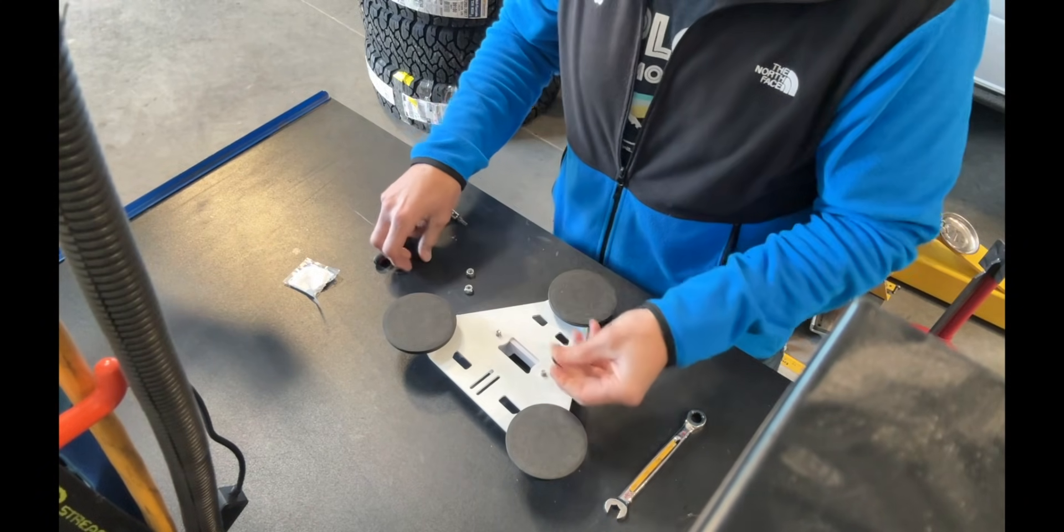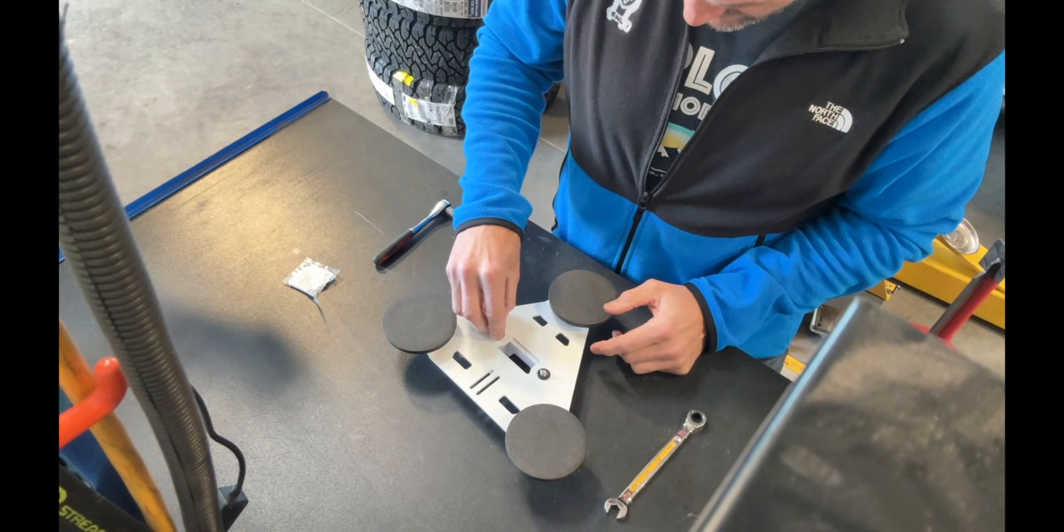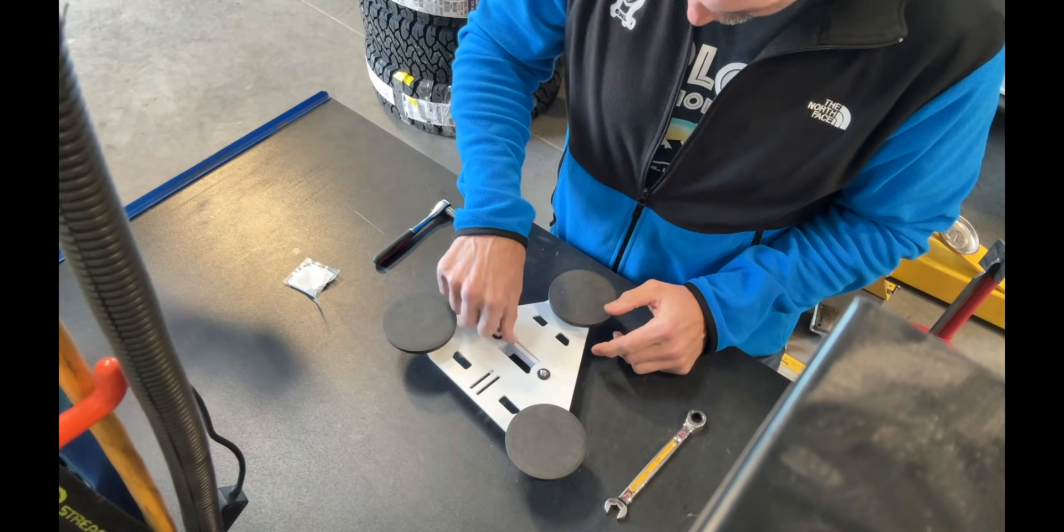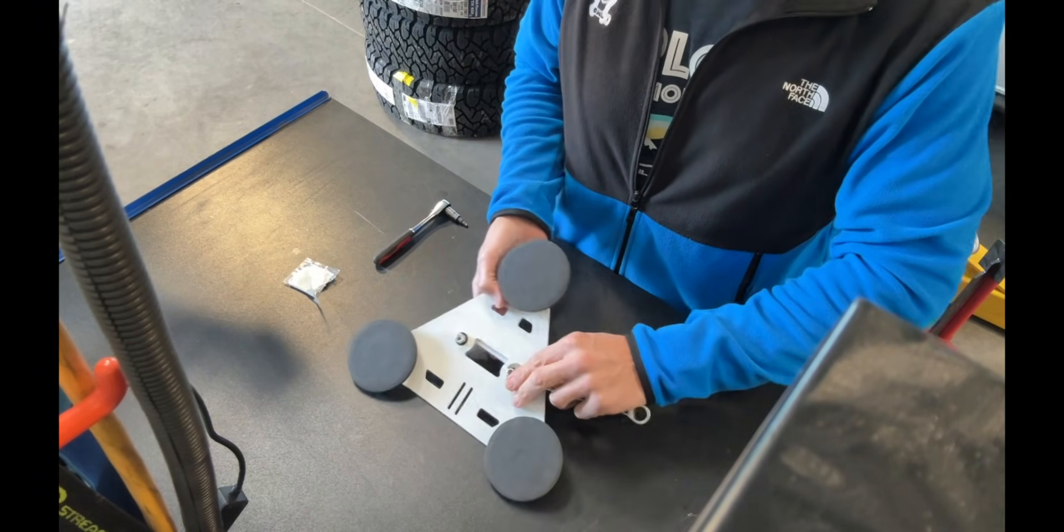Sorry, I have the wrong washer on there. So then you put these two washers down. And then you've got your nylocks. And then you just tighten this down.